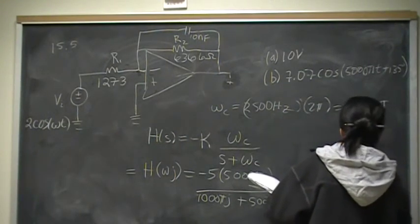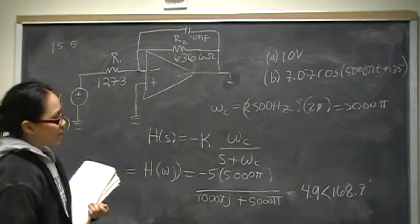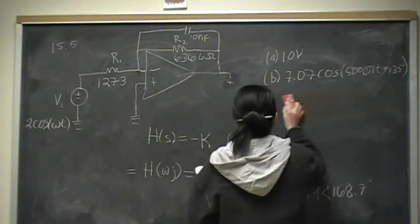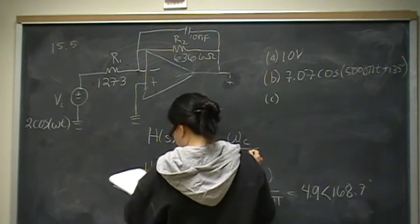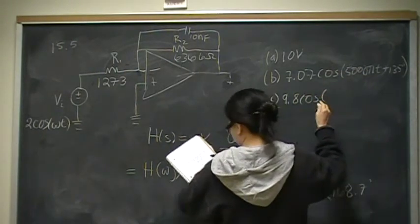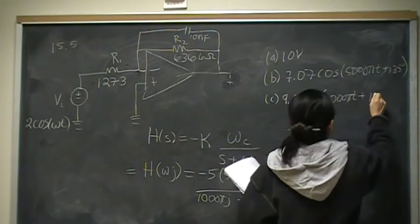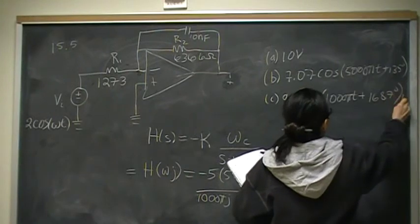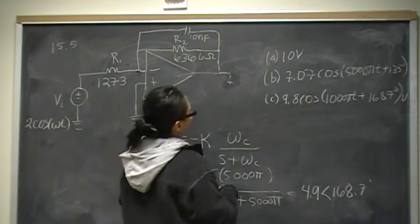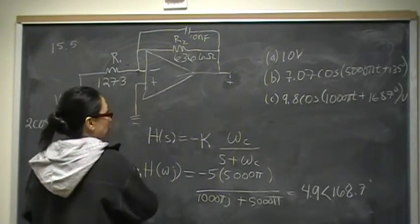Again, the transfer function is V_out over V_in, so multiplying by V_in, which is 2, our answer for part c is 9.8 cosine(1,000πt + 168.7°) volts. That is a very low frequency, and it lets most of the voltage through. That is what we expected — it's a low-pass filter, so at low frequencies it lets the voltage through.